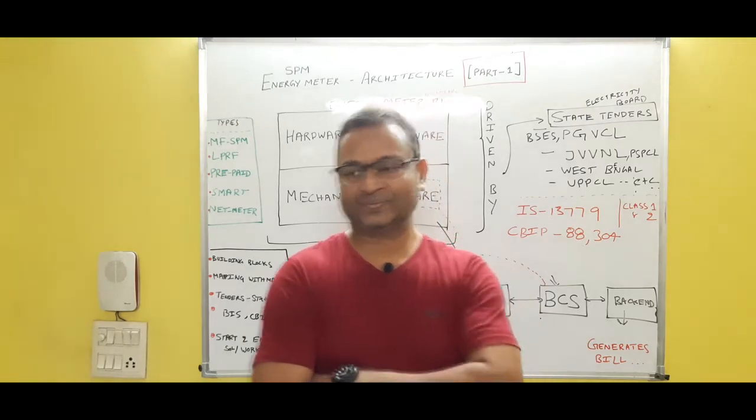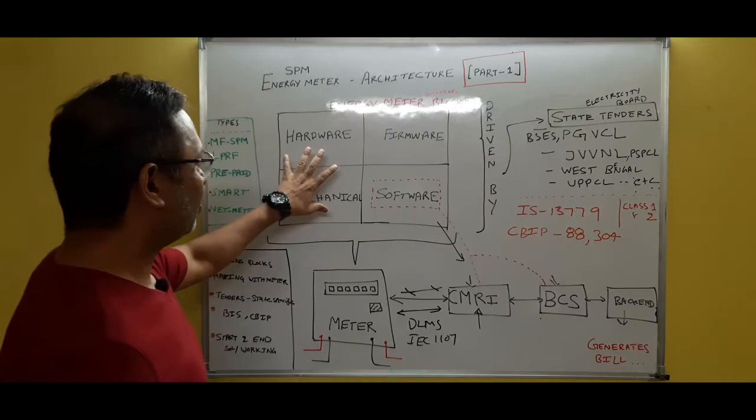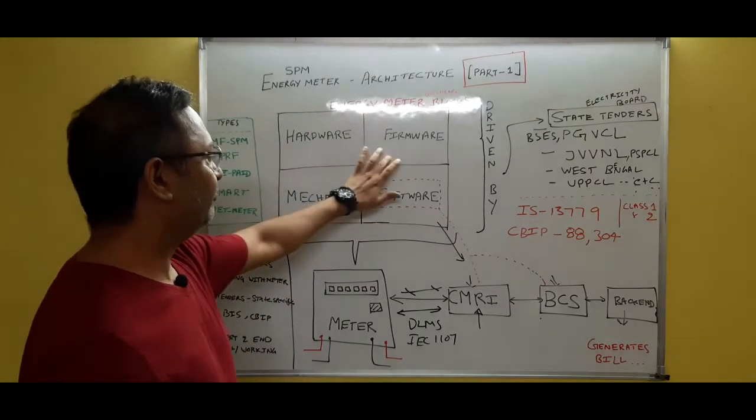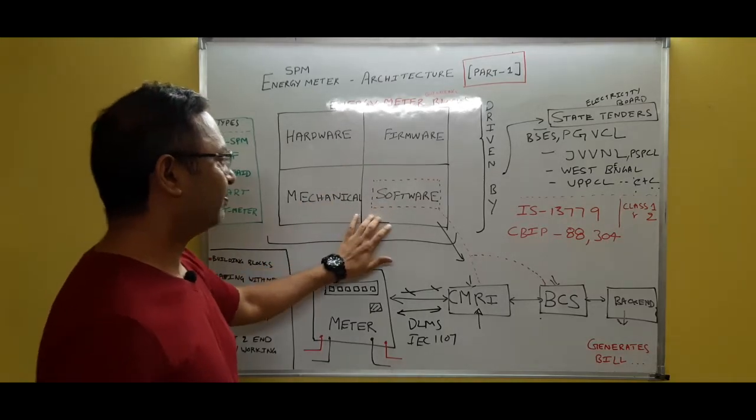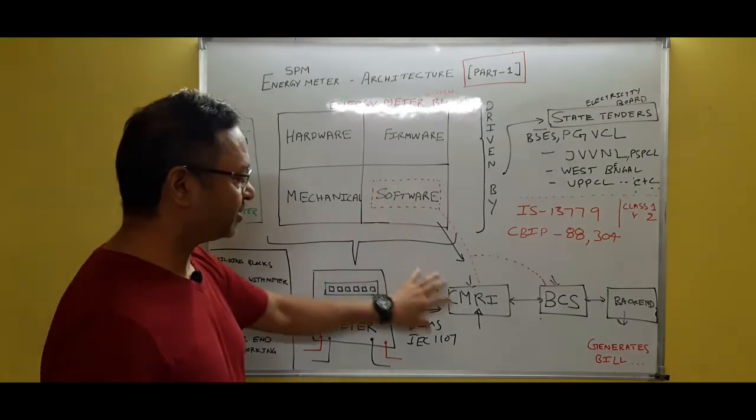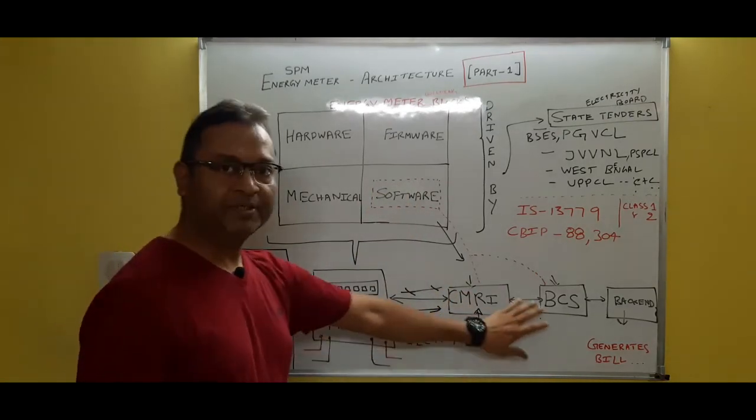Let's start with this. So here these are the four major blocks which make our energy meter: one is the hardware block, firmware block, mechanical block, and software part. This software part also consists of external equipment like CMRI and BCS.